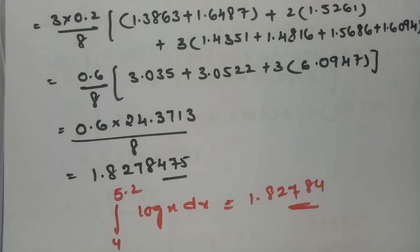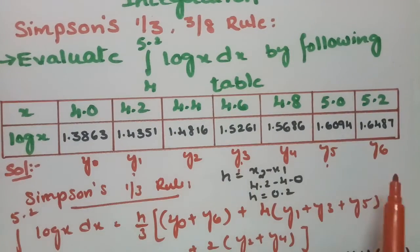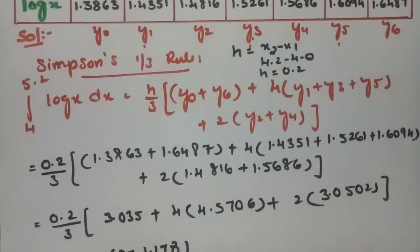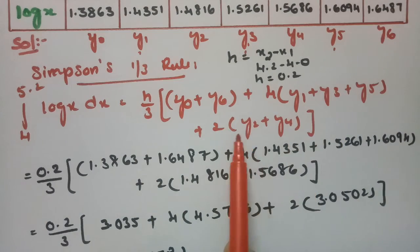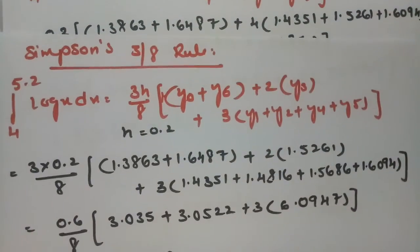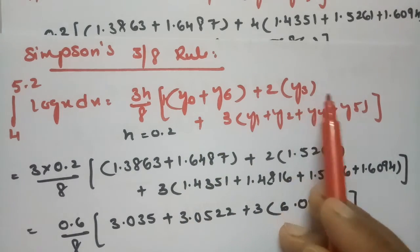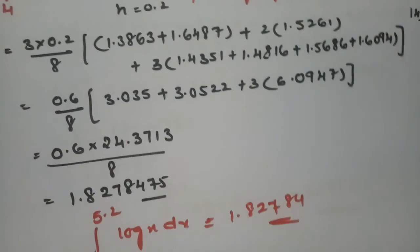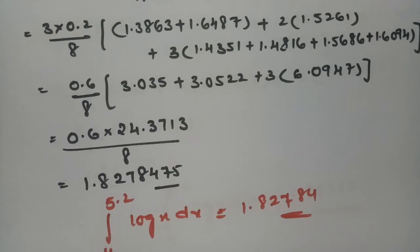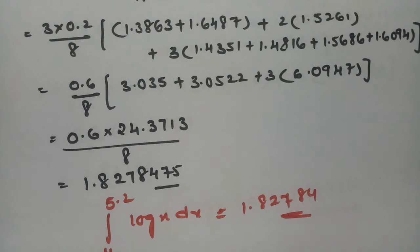So this is how we solve using both rules, and it is quite straightforward. After setting up the table, we substitute into the formula: 4 times odd ordinates and 2 times even ordinates for the 1/3rd rule, and first plus last term, 2 times multiples of 3, and 3 times the rest for the 3/8th rule. Both give approximately 1.8278. Thank you so much for watching — please watch more videos in this series, practice them, and share with your friends.